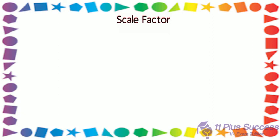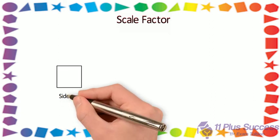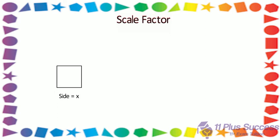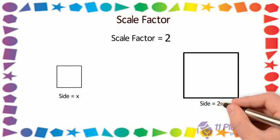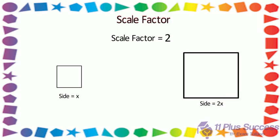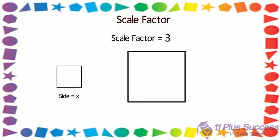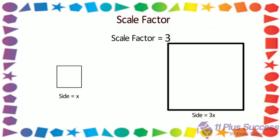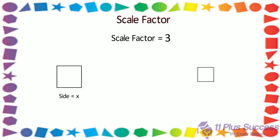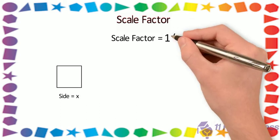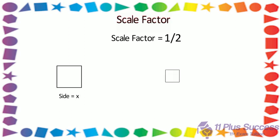Scale factor: To enlarge any image, you must know how much the shape needs to be enlarged — this is called the scale factor. For example, if the scale factor is 2, the side lengths of the new image will be twice the side lengths of the original image. A scale factor of 3 means the side lengths will be 3 times the original. If the scale factor is a fraction, the shape decreases in size but is still called an enlargement. A scale factor of one half means the new shape is 2 times smaller than the original.